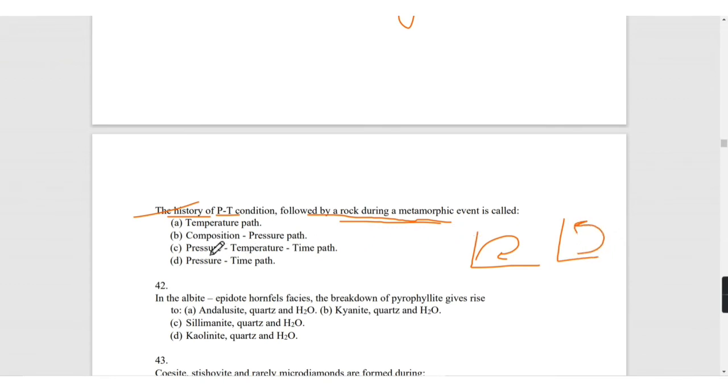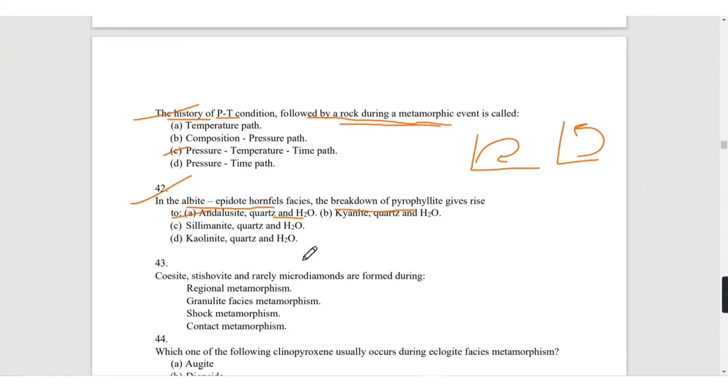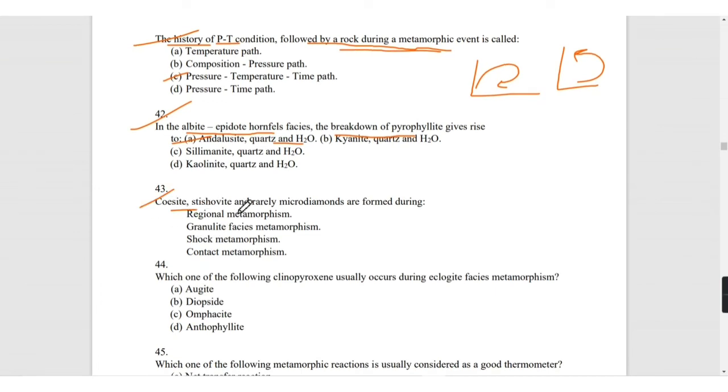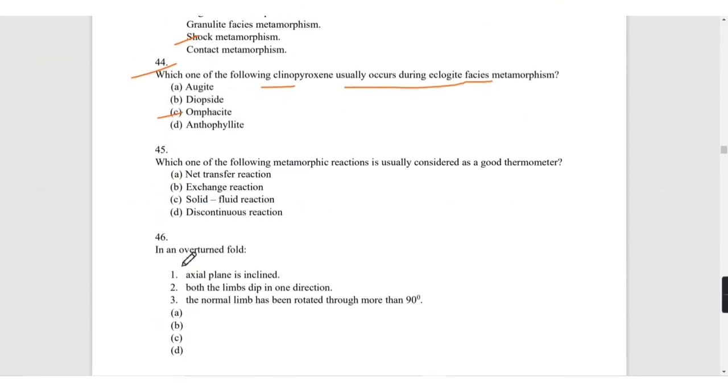In albite-epidote hornfels facies, the breakdown of pyrophyllite gives rise to andalusite, quartz, and water. This you will see in Winter book. Coesite tissue white rarely microdiamonds are formed during shock metamorphism. Which of the following cpx or clinopyroxene usually occurs during the eclogite facies metamorphism? It is very easy, it is omphacite. Which of the following metamorphic reaction is usually considered as a good thermometer? It is exchange reaction.